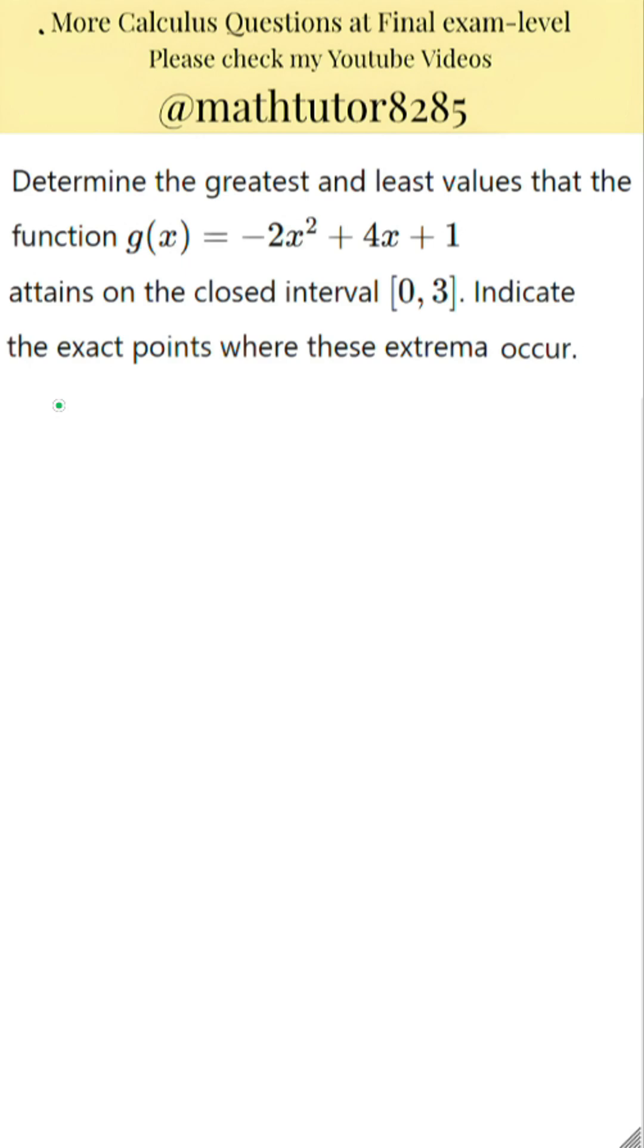First step is to evaluate the function at the two endpoints of the interval. When x is 0, the function becomes negative 2 times 0 squared plus 4 times 0 plus 1. That simplifies to just 1.